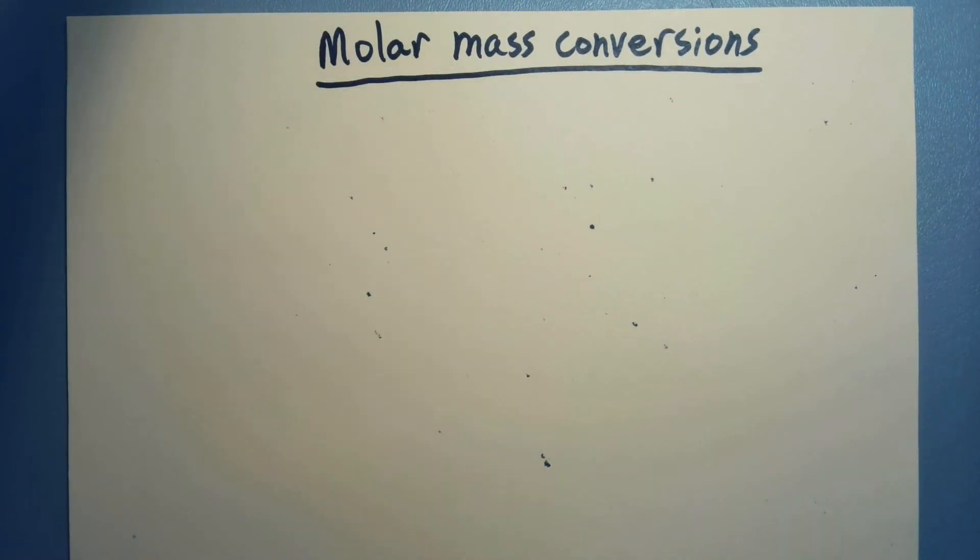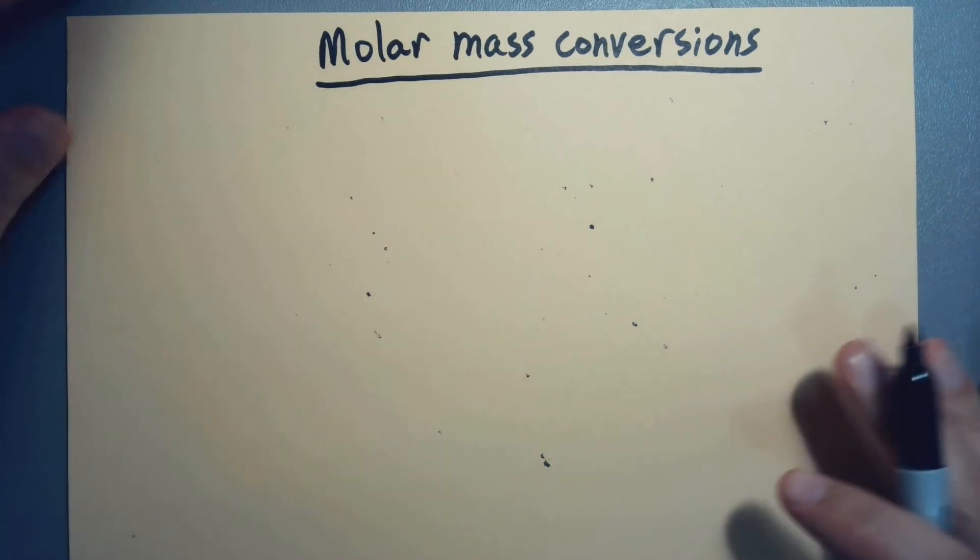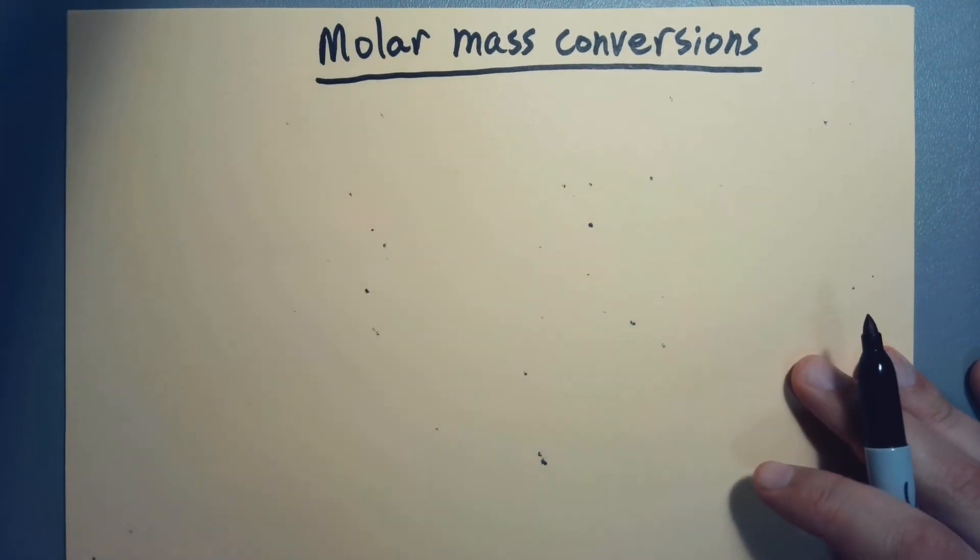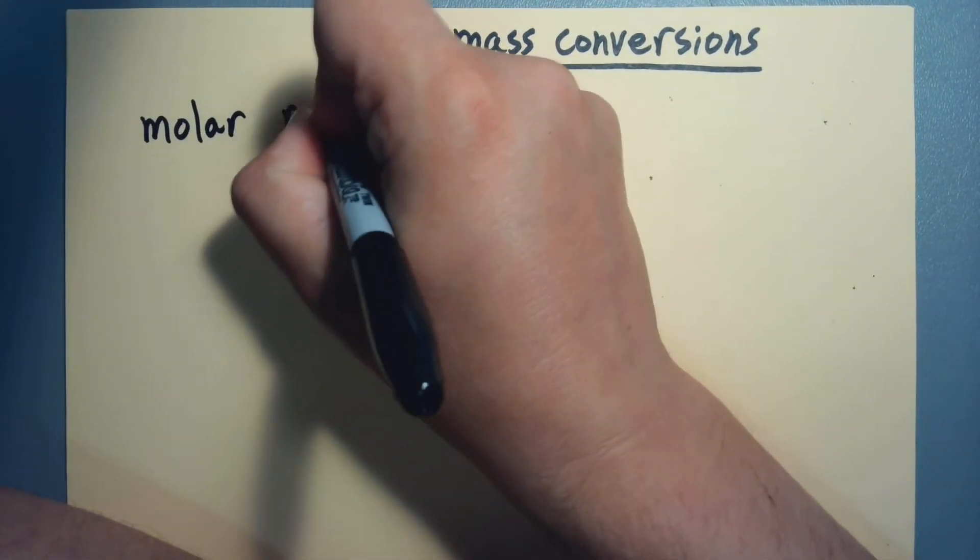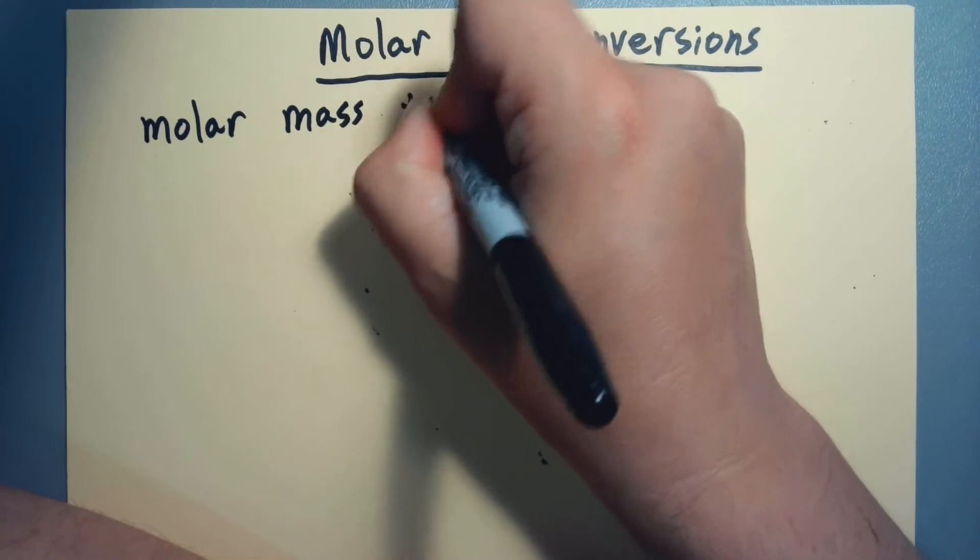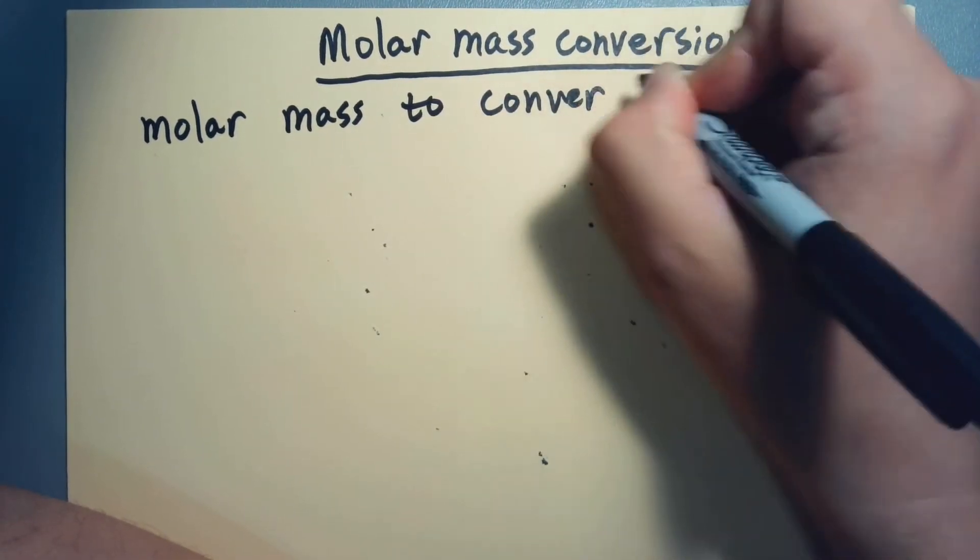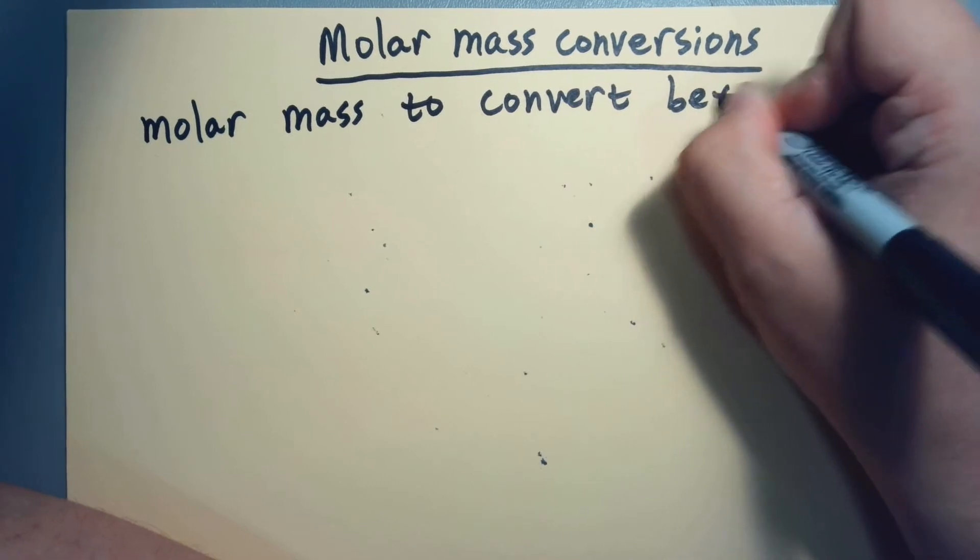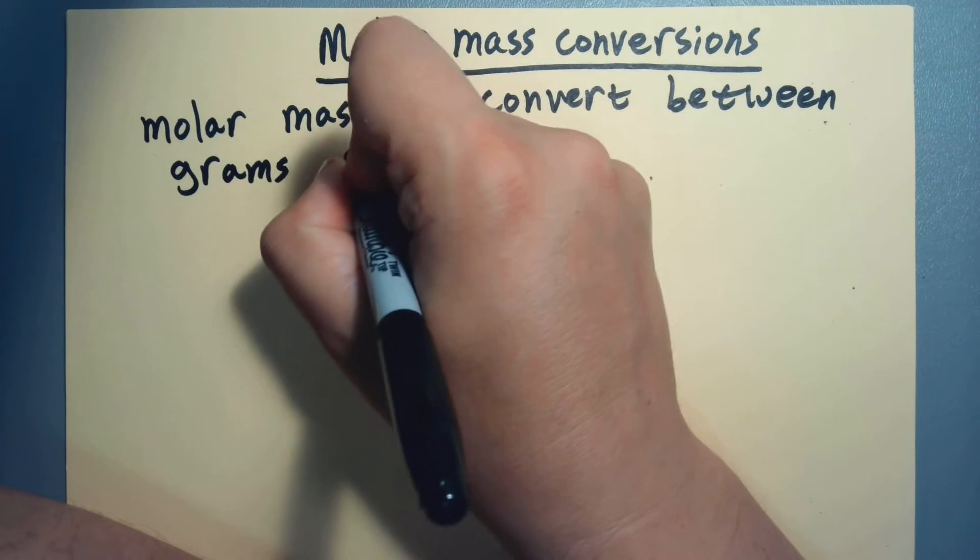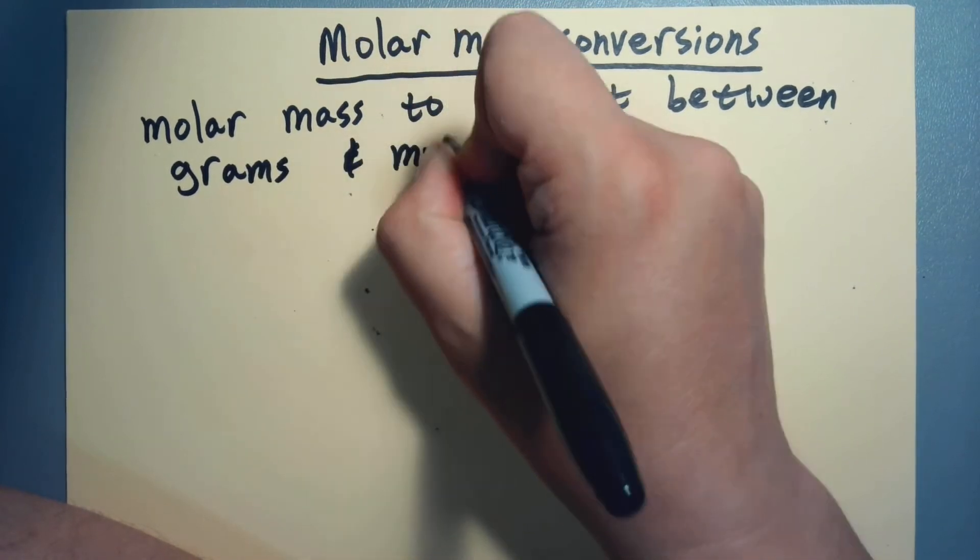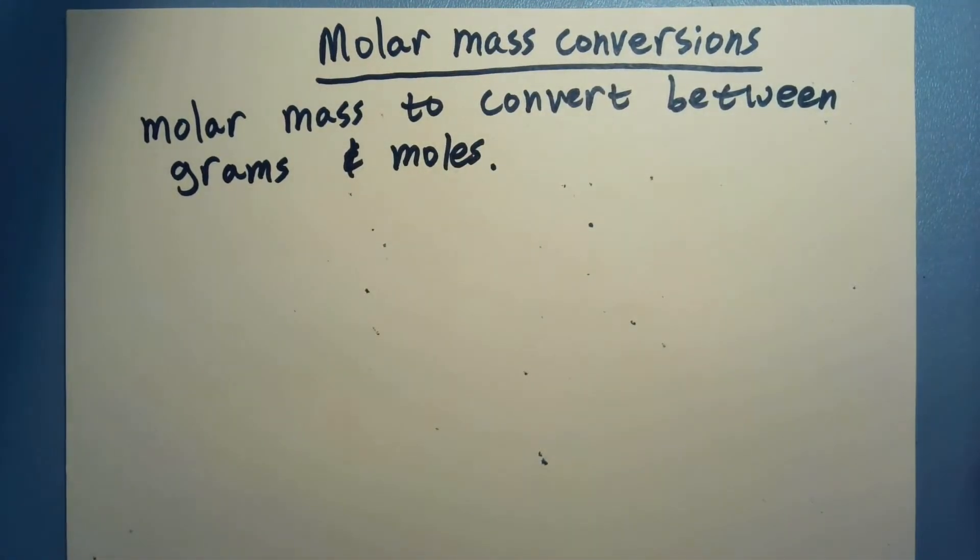Alright, so to close this section out, we're going to do a little bit of math. Molar mass conversions - what are we doing? Well, essentially we're just using molar mass to convert between grams and moles. That's all we're doing. The units of molar mass are grams per mole, so it bridges how much something has a mass versus how many there are.